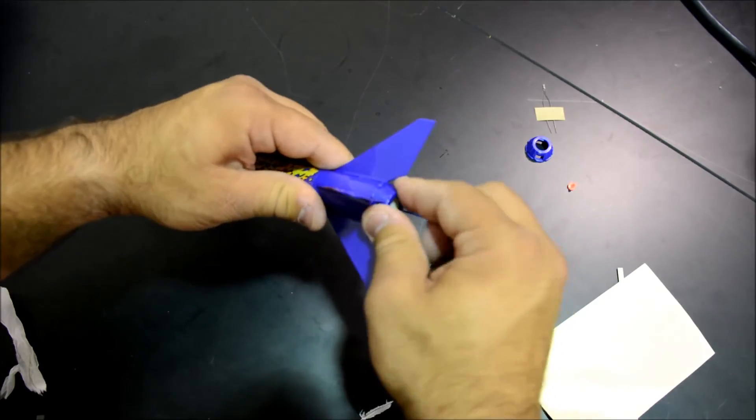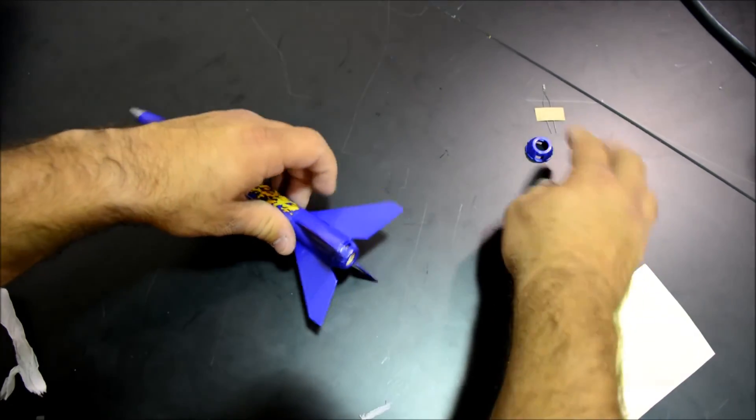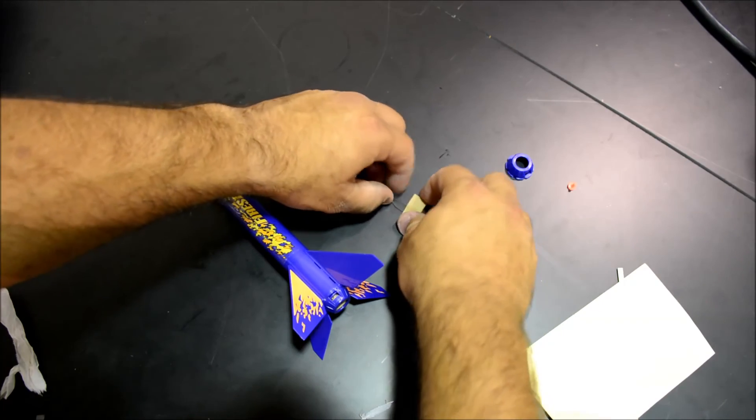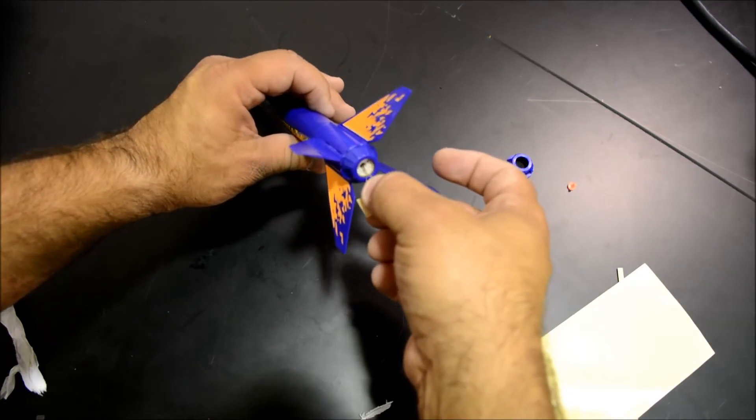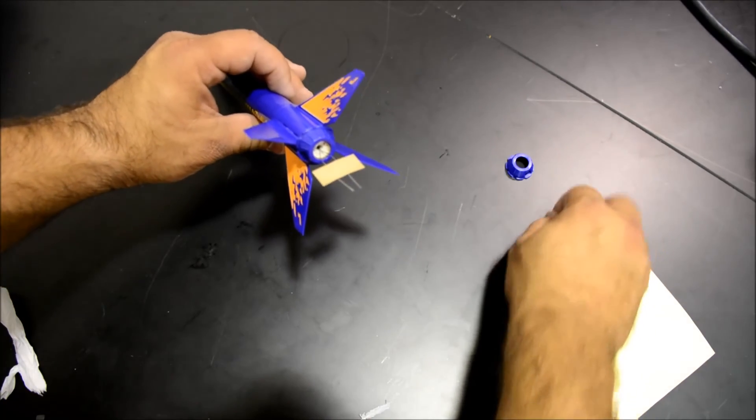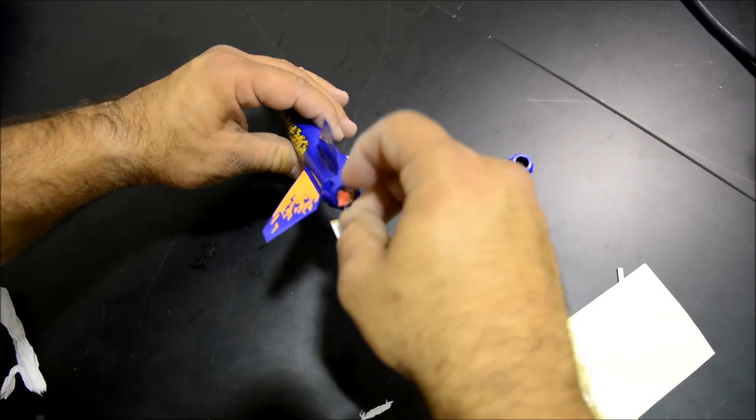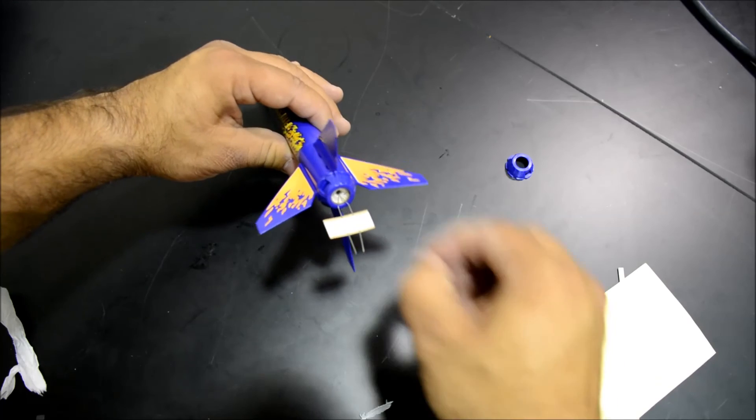And twist. That will lock the motor in. This is an electric match. Shove it into the hole in the bottom of the motor, and then insert a motor plug.